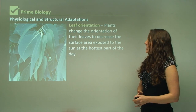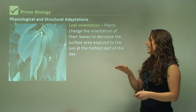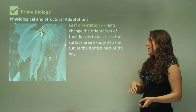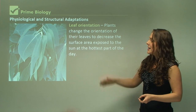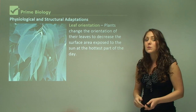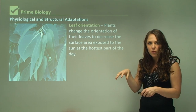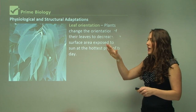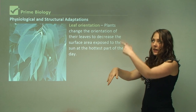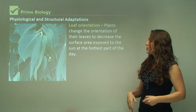Leaf orientation: plants change the orientation of their leaves to decrease the surface area exposed to the sun at the hottest part of the day. A eucalyptus plant doesn't wilt — the leaves don't change shape or form — but they do fall. By falling, that again decreases the surface area exposed to the sun.